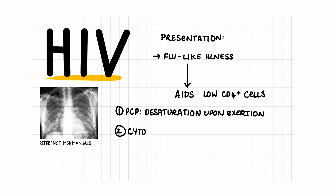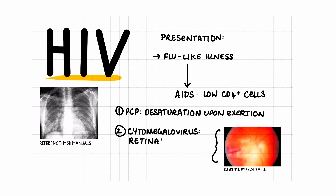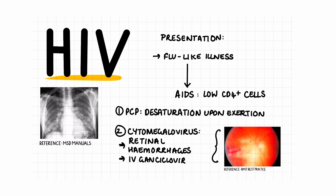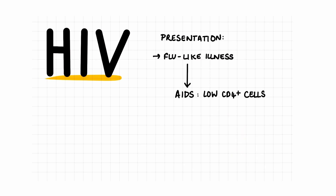Cytomegalovirus is when patients usually present with blurred vision, and on fundoscopy there are retinal hemorrhages alongside necrosis. This is often described as a pizza retina, and IV ganciclovir is used as treatment.